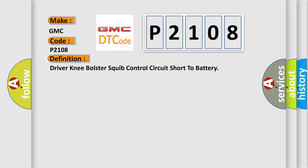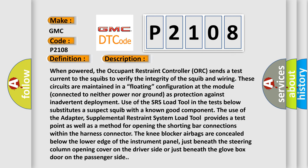When powered, the occupant restraint controller (ORC) sends a test current to the squibs to verify the integrity of the squib and wiring. These circuits are maintained in a floating configuration at the module, connected to neither power nor ground, as protection against inadvertent deployment. Use of the SRS load tool substitutes a suspect squib with a known good component. The adapter supplemental restraint system load tool provides a test point as well as a method for opening the shorting bar connections within the harness connector. The knee blocker airbags are concealed below the lower edge of the instrument panel, just beneath the steering column opening cover on the driver side, or just beneath the glove box door on the passenger side.